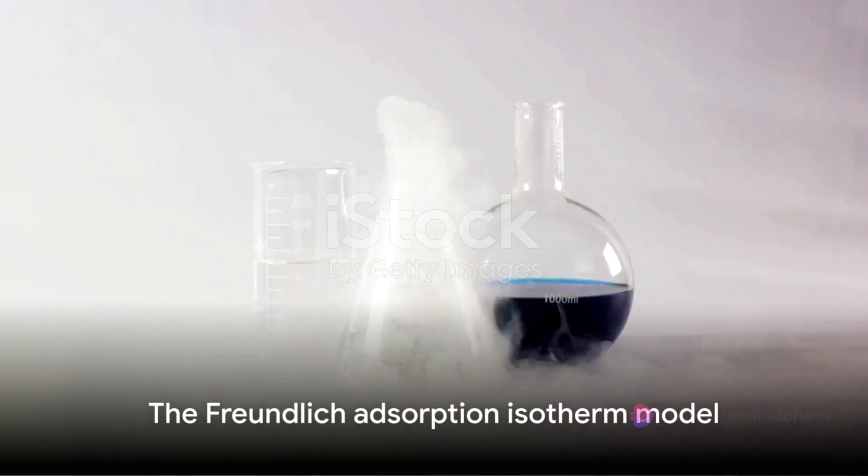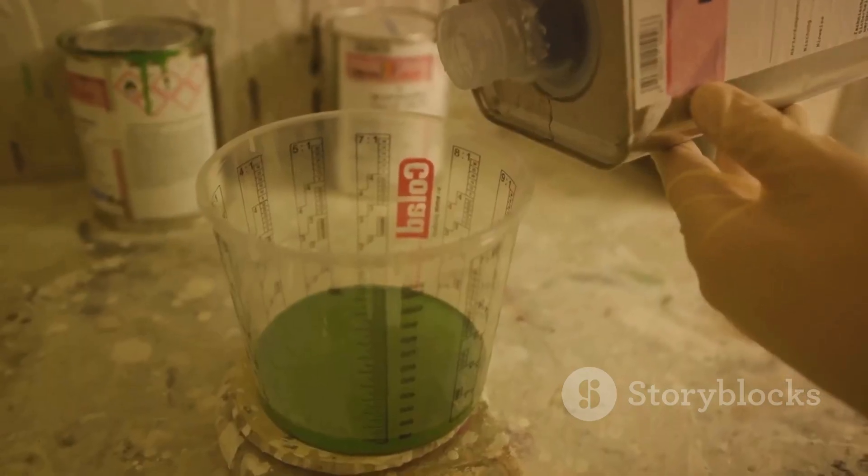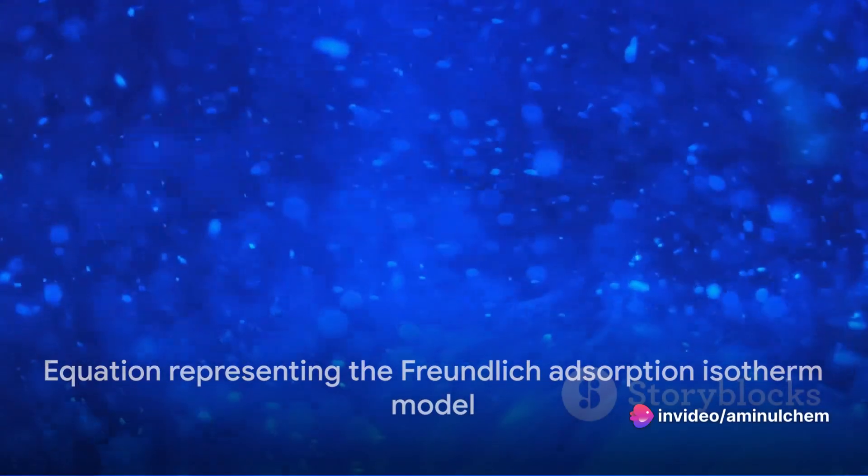Now onto the model itself. The Freundlich adsorption isotherm model presents a relationship between the concentration of a solute on the surface of an adsorbent to the concentration of the solute in the liquid phase. It's represented by the equation x/m equals kp to the power of 1/n.